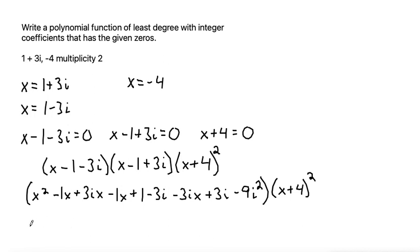Next, let's combine some like terms. We don't have any other squared terms, so we can bring down the x squared. When I'm combining like terms, I like to cross out the terms that I've used so I can see what's left. We have negative 1x and negative 1x, that makes negative 2x. We have a positive 3ix and a negative 3ix. Those cancel out directly. We can bring down the plus 1. Then we have minus 3i and plus 3i, those cancel out directly. And let's bring down our negative 9i squared. And then bring down the x plus 4 squared.